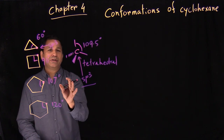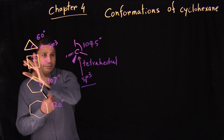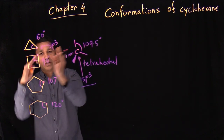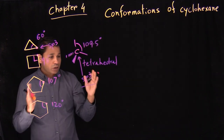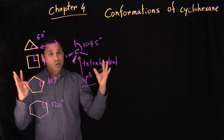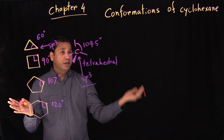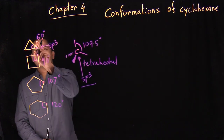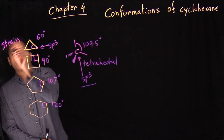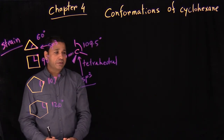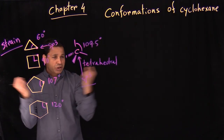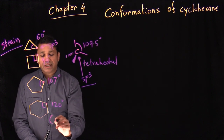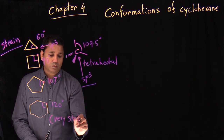So sp3 carbons ideally should have a bond angle of 109.5, but none of them match exactly — cyclopentane is close but still not perfect. What we are doing to form the ring is squeezing those bonds. We're squeezing the bond from 109.5 to 90 degrees to form the ring. When you try to squeeze the bonds, those bonds have electrons, and electrons have the same charge, so they want to stay as far apart as possible. So the molecule will not like it — there's a lot of strain in the molecule.